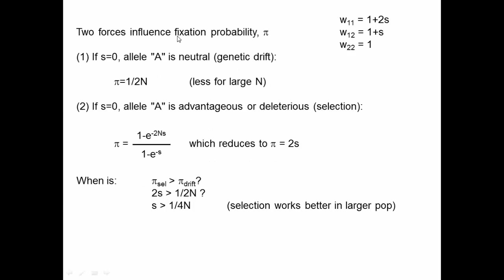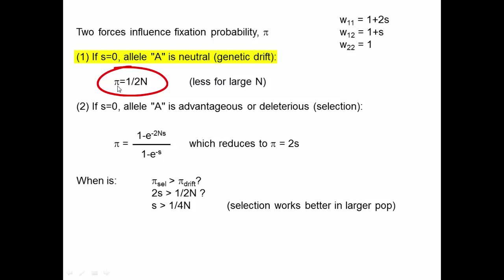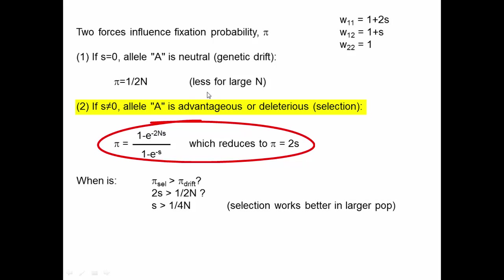Another way to think about this is through fixation probability. For a neutral allele (s = 0), the capital A allele would only fix by genetic drift, so the probability of fixing a single copy is 1/2N — less for larger populations. If s ≠ 0, the allele is either advantageous or deleterious and selection occurs. The fixation probability for an advantageous allele reduces to approximately 2s.